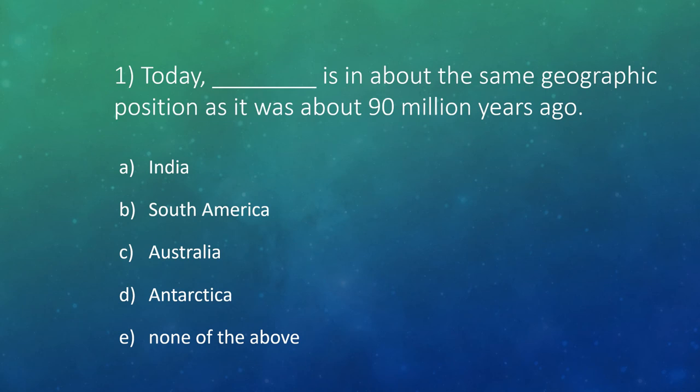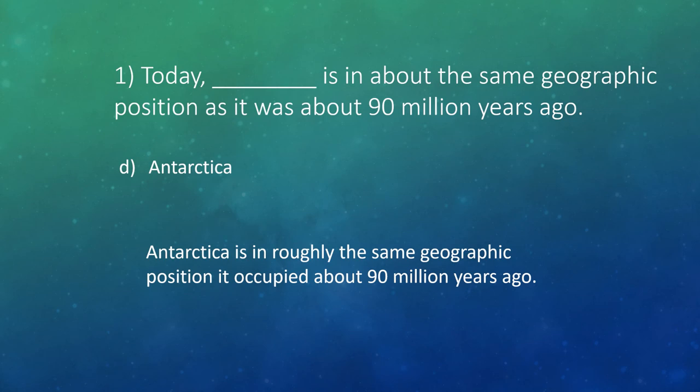Question 1: Today, blank is in about the same geographic position as it was about 90 million years ago. The answer is D: Antarctica is in roughly the same geographic position as it was 90 million years ago.